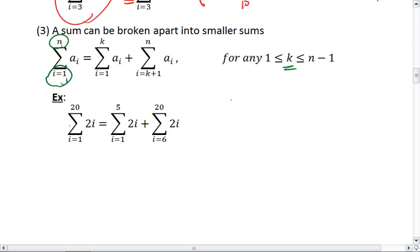For example, if I'm summing from 1 to 20, I'm going to pick 5 and decide to cut my sum into two parts. I can sum the terms from 1 to 5, and then I can sum the terms from 6 to 20 separately and add those two sums together.